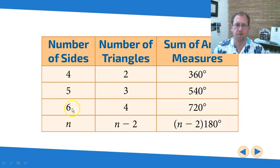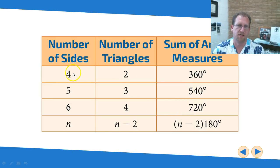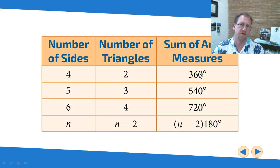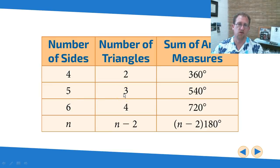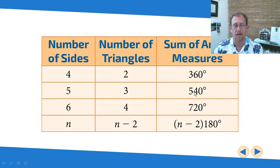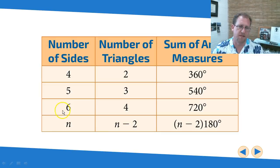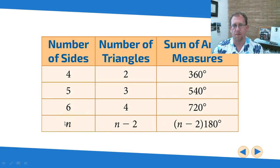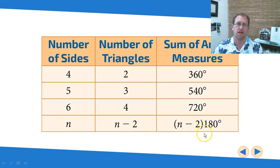We're looking at the total number of interior angle measures for any polygon. A 4-sided figure is 2 triangles — each representing 180 degrees — for 360 total. Let's extrapolate: a 5-sided figure can be divided into 3 triangles, so 180 × 3 = 540 degrees. Any pentagon has 540 total interior degrees. A 6-sided figure can be divided into 4 triangles for 720 degrees. In general, any n-gon can be divided into (n − 2) triangles, so it has (n − 2) × 180 degrees total interior measure. This is an important formula to have in your toolbox.